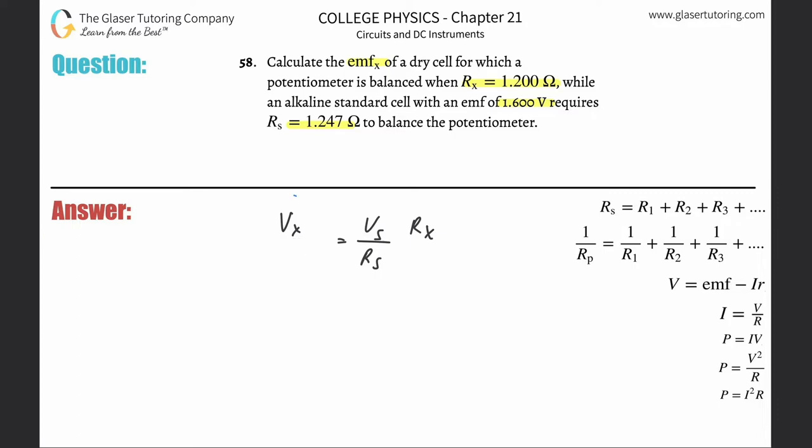So this is now my formula. So v sub x will equal v sub s, which is the standard cell's emf of 1.6. r sub x, they told us was 1.2. And then r sub s is 1.247.